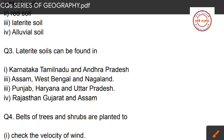Question number three: laterite soils can be found in which states? First option: Karnataka, Tamil Nadu, and Andhra Pradesh. Second option: Assam, West Bengal, and Nagaland. Third option: Punjab, Haryana, and Uttar Pradesh. Fourth option: Rajasthan, Gujarat, and Assam. The correct answer is option one — Karnataka, Tamil Nadu, and Andhra Pradesh.